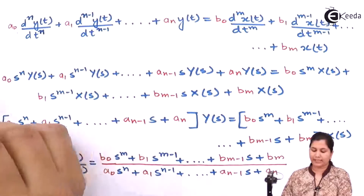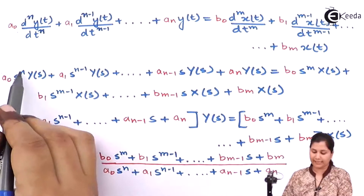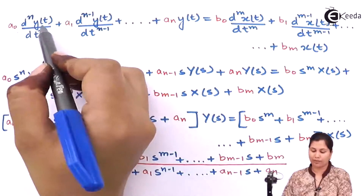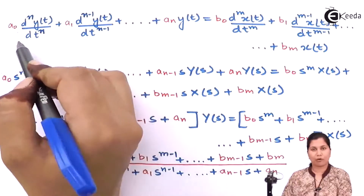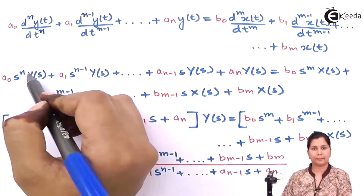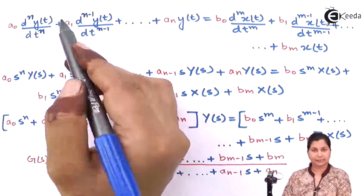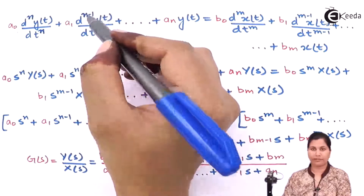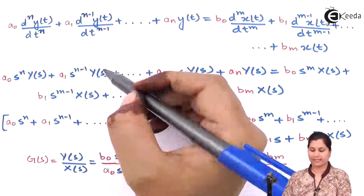When we take the Laplace transform of both sides of the equation, we get a0 times s to the power n times Y(s) — since Y(s) is the Laplace transform of y(t) and the Laplace transform of a differential function gives s raised to the order as the power. The second term's Laplace transform will be a1 times s to the power n minus 1. The power of the differential becomes the power of s, and the Laplace transform of y(t) is Y(s).